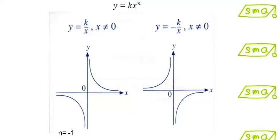This is the graph of y equals k over x where n is equal to negative 1. Note that for both graphs, the curves cannot touch x equals 0 and y equals 0.